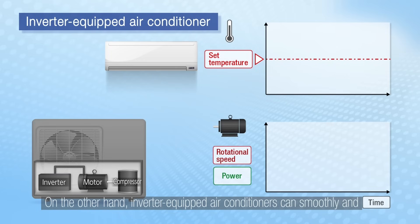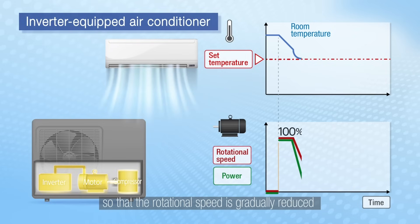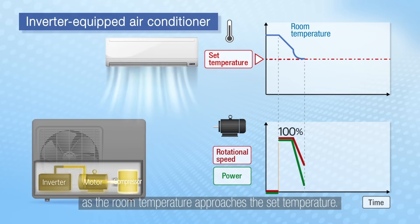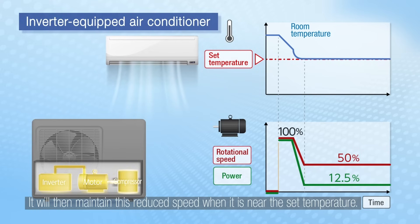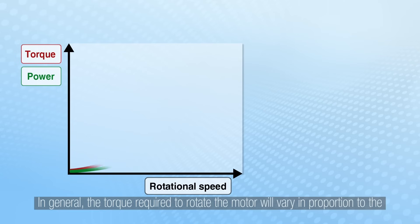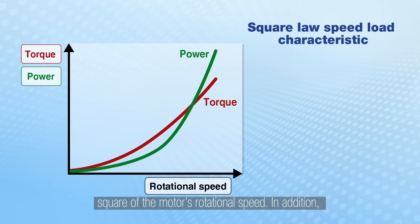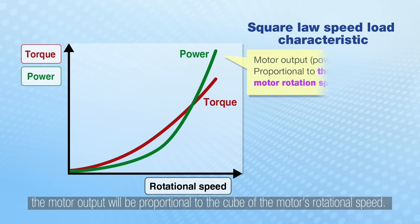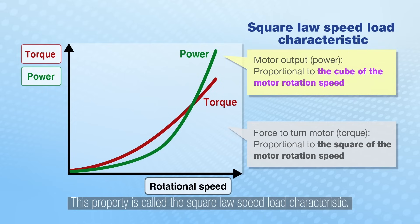On the other hand, inverter-equipped air conditioners can smoothly and precisely control the rotational speed of the motor so that the rotational speed is gradually reduced as the room temperature approaches the set temperature. It will then maintain this reduced speed when it is near the set temperature. In general the torque required to rotate the motor will vary in proportion to the square of the motor's rotational speed. In addition, the motor output will be proportional to the cube of the motor's rotational speed. This property is called the square law speed load characteristic.